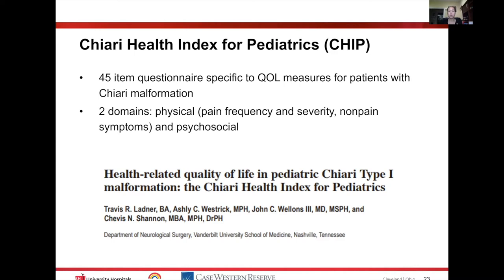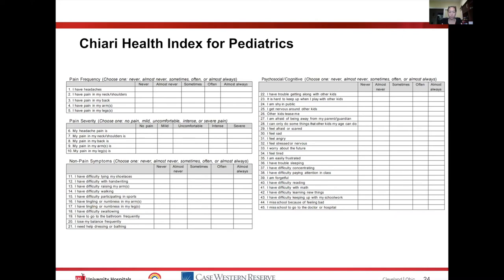There are two primary domains. The physical domain covers pain frequency, pain severity, and non-pain symptoms. The questionnaire includes everything from headaches or pain in the back, arms, and legs — both how frequently and how severely the pain is occurring. Non-pain symptoms include activities of daily living such as handwriting, raising your arms, walking, and playing sports.